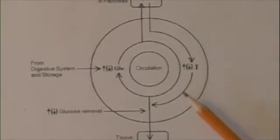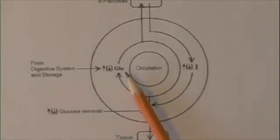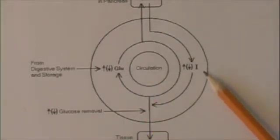The donut-shaped ring in the middle represents the cardiovascular system, the circulation of the blood. Glucose is represented by GLU. Insulin by the letter I.